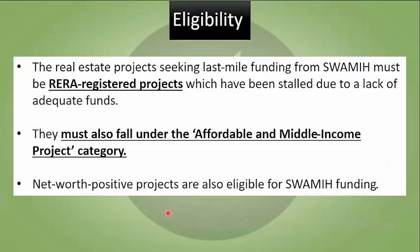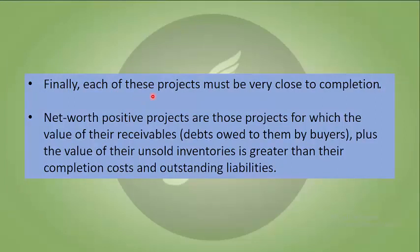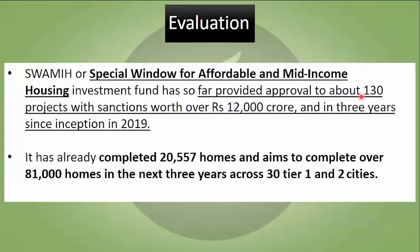The real estate projects seeking last-mile funding from SWAMIH must be RERA-registered projects that have been stalled due to a lack of adequate funds. They must also fall under the affordable and middle-income project category. Net worth positive projects are also eligible. Each of these projects must be very close to completion. Net worth positive projects are those for which the value of their receivables plus the value of their unsold inventory is greater than their completion cost and outstanding liabilities.